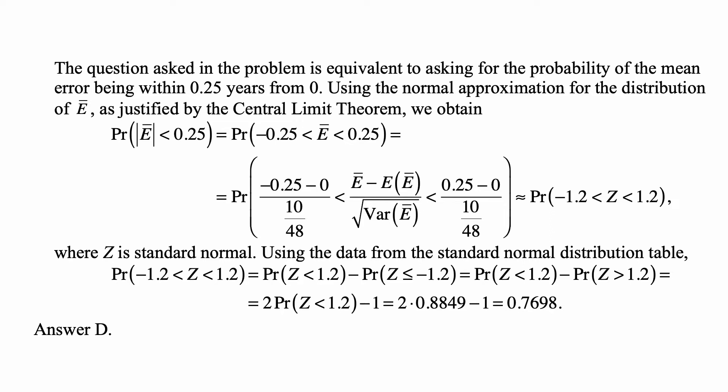So the random variable in the middle is approximately standard normal. We'll write Z for the standard normal distribution that is approximately equal to it. And the left-hand side is equal to negative 1.2, and the right-hand side is equal to 1.2. So this is the probability that a standard normal random variable is between negative 1.2 and 1.2.